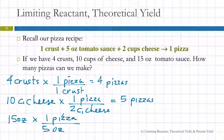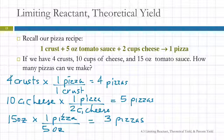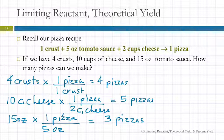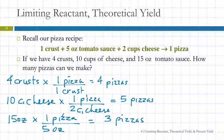The 10 cups of cheese thing we've already done, but I'm going to do it again anyway. 10 cups of cheese times one pizza per two cups of cheese — so that gives us five pizzas. And then the sauce: we've got 15 ounces of sauce, and we need five ounces for every pizza. 15 divided by five is three.